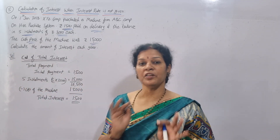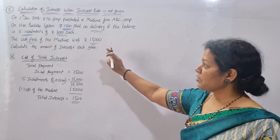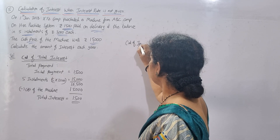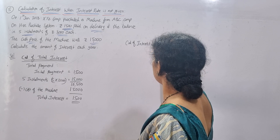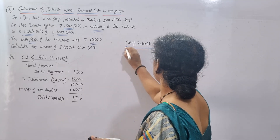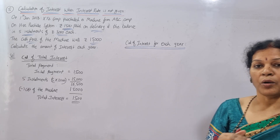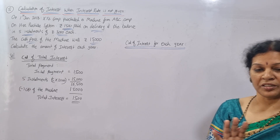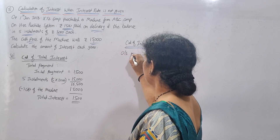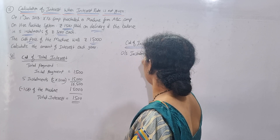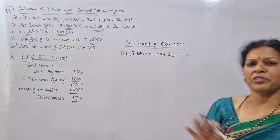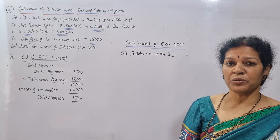Now we know the total interest, but we want to know how much interest falls in each year. For that, we need to calculate the outstanding installments at the beginning of each year. In the first year, they have to pay all five installments in total — so the outstanding installment amount at the start of year one is ₹15,000.